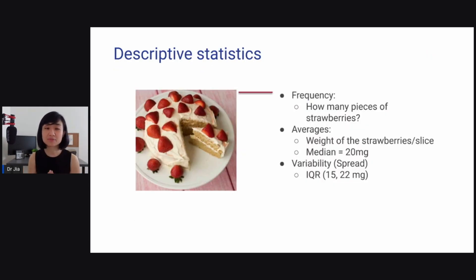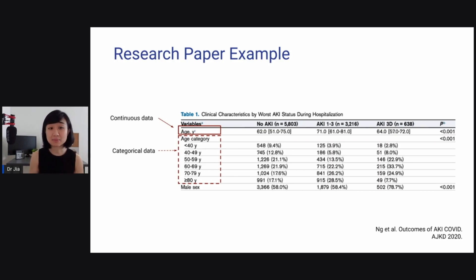So some examples of descriptive statistics. The first one is frequency. So this is a piece of strawberry cake. And the frequency question you have is how many pieces of strawberries do you have here? The next question, averages. What sort of averages can you ask? What is the weight of strawberries per slice? Maybe you can say the median weight is 20 milligrams. Then the third question is, what's the spread? What's the variability? Perhaps I found that it's not symmetrical, it's not a symmetrical distribution, so I report on the interquartile range. Some pieces will have 15 and some up to 22 milligrams.